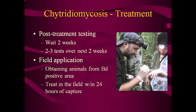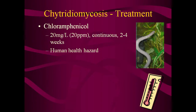Field application of the itraconazole treatment protocol can easily be done and can increase survival of animals from a BD-positive environment that are being collected for conservation assurance colonies. Animals that are BD-positive when captured may rapidly develop clinical illness due to stress-induced immunosuppression. Those animals captured on the first day of a multi-day expedition may be especially at risk. In known BD-positive regions, beginning the treatment protocol within the first 24 hours of capture can markedly increase overall survival rates. Chloramphenicol at a concentration of 20 mg per liter delivered as a continuous bath for 2–4 weeks has shown promise, but few studies have been performed. Caution should be used when handling chloramphenicol because it is known to cause irreversible aplastic anemia in humans that are sensitive to the drug.